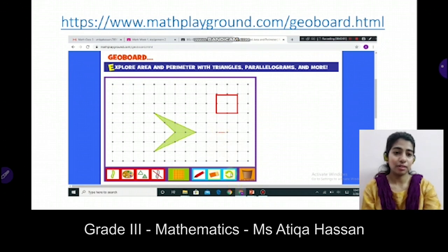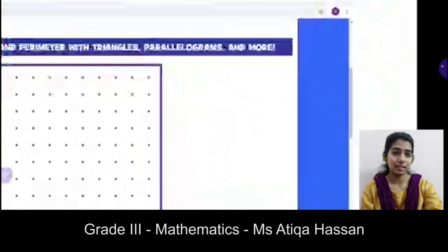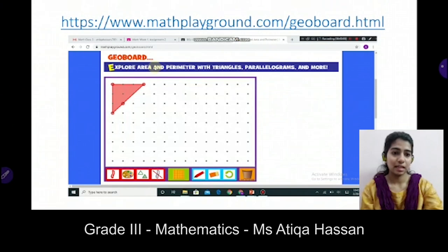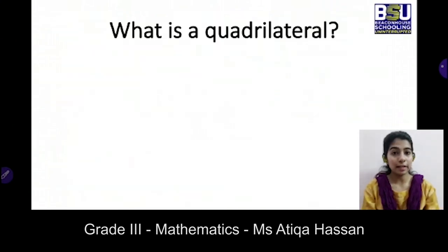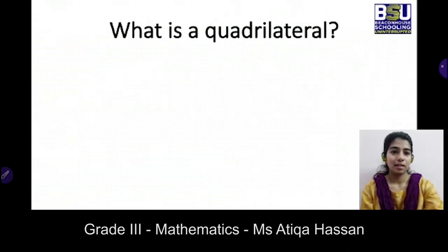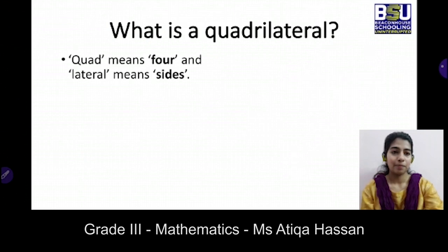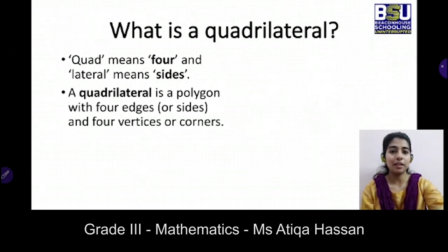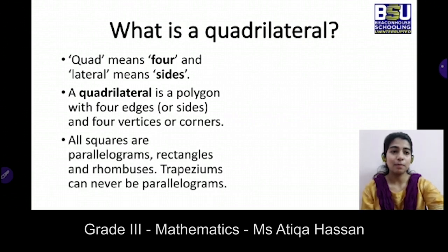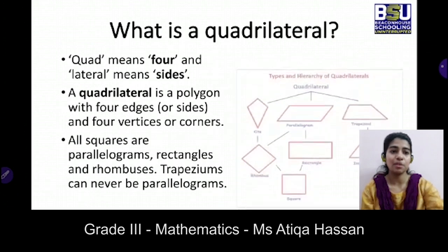What is a quadrilateral? You know that we have studied it in unit number four. Quad means four and lateral means sides, so a quadrilateral is a polygon with four sides, four edges, or four corners. Some examples are mentioned here, along with the types and hierarchy of quadrilaterals — the family tree of quadrilaterals.